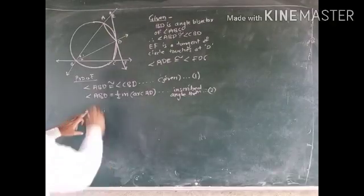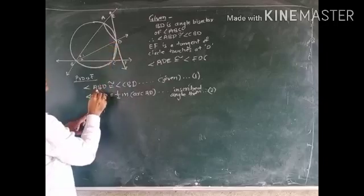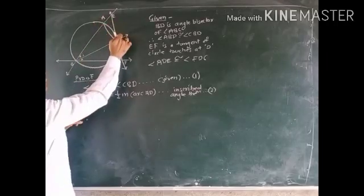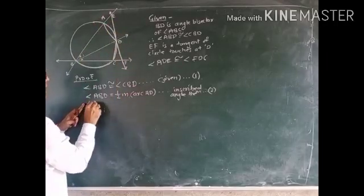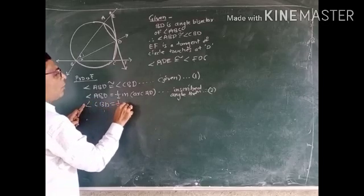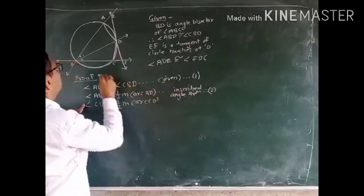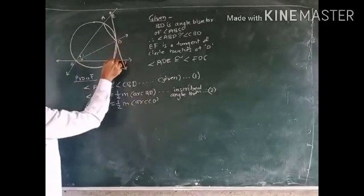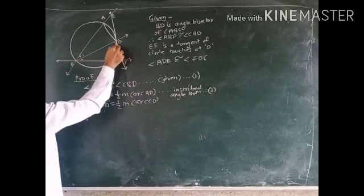Now see angle ABD, this angle is one half of arc AD, and angle CBD is one half of measure of arc CD. That means this angle is one half of this arc.